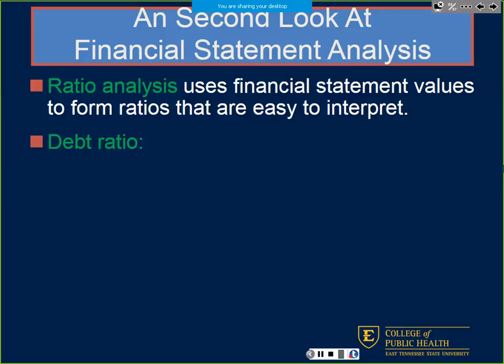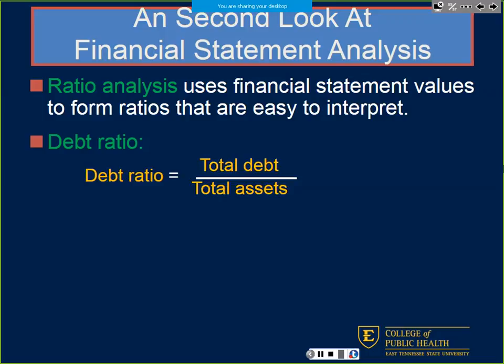We have a couple different ratio analyses. We're slowly dipping your toe in the water before jumping fully into ratios. One ratio we can look at with statement of cash flows for a second look at financial analysis: the debt ratio. Debt ratio equals total debt divided by total assets. Go ahead and calculate that.